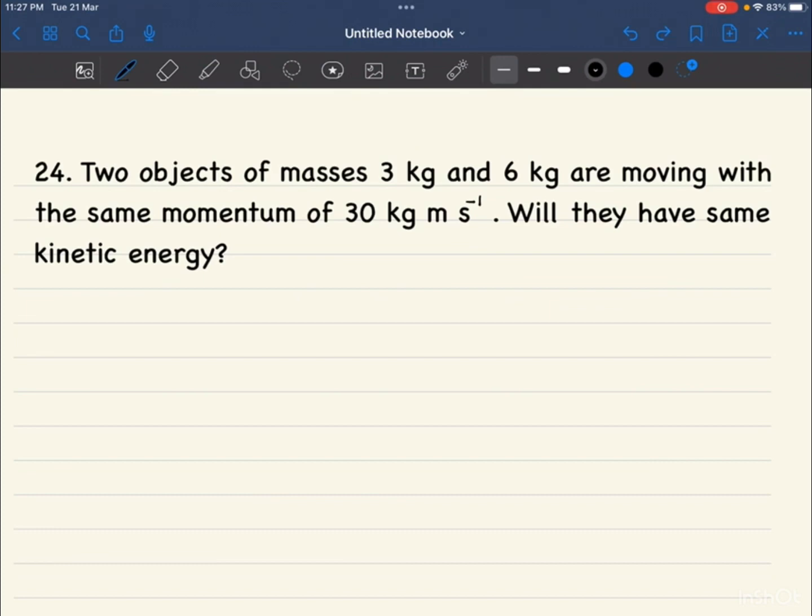But the two objects, the kinetic energy will be higher. So given, if you have two masses: mass 1 is 3 kg, then mass 2 is 6 kg, with the same momentum. That means it is 30 kg per second. P1, P2 doesn't change. The momentum is denoted by letter P, so it is 30 kg per second.